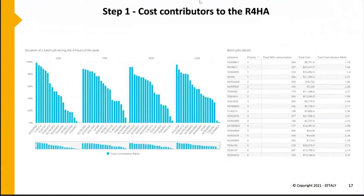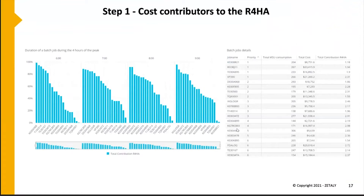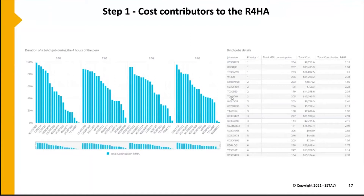Step one: know the cost contributors to the rolling four-hour average. A lot of companies say they can display this in MSUs, but can't display it in dollar costs - well, we can. We show how much each workload costs in MSUs and in dollars and cents, and this is really key because if you're doing it in dollars and cents it means a lot more to a lot more people. You can see there's a job beginning with T - that's a testing job. Why is it adding $11,000 to my peak? If you can start working with the businesses, maybe that workload can run at a slightly different time, all aimed at reducing your contribution to the peak four-hour rolling average.